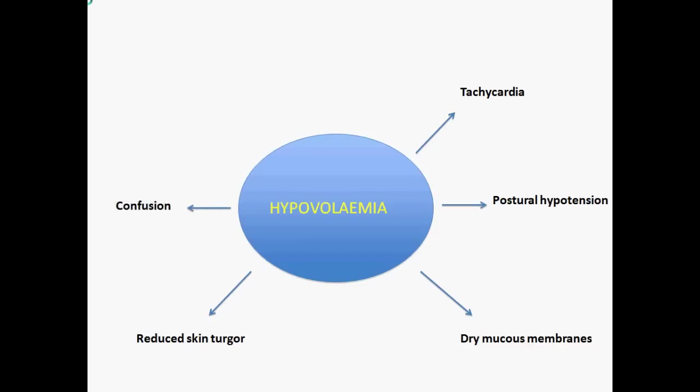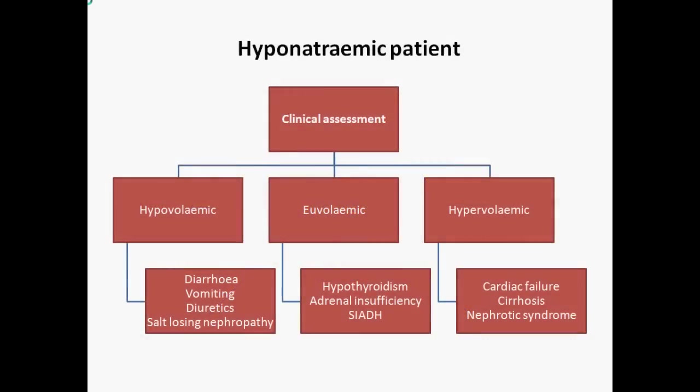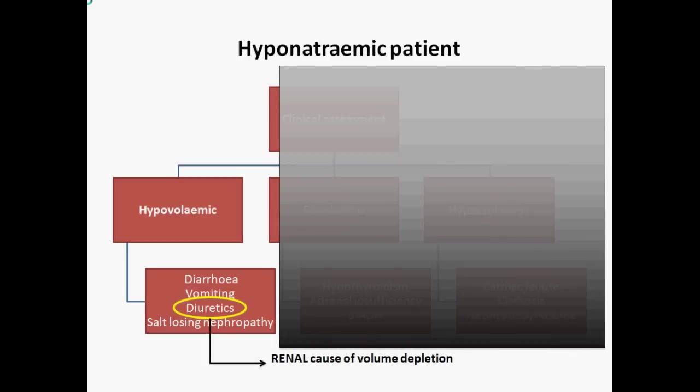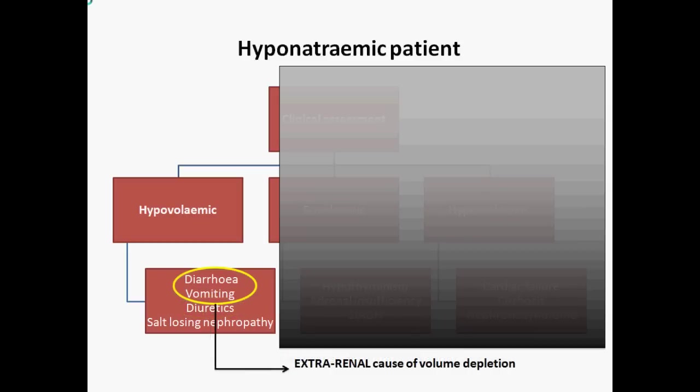If the patient is confused or drowsy, this means there is reduced cerebral perfusion. If there is a reduced urine output of less than 30 mL/hour, this is usually abnormal. If the patient is hypovolemic, you ask yourself where they have lost the fluid from. Is the cause a renal cause of volume depletion? Ask the patient if they have been started on diuretics in the last 2-3 weeks. Or is it an extrarenal cause, with volume loss from the GI tract? You can ask about symptoms of diarrhoea and vomiting.